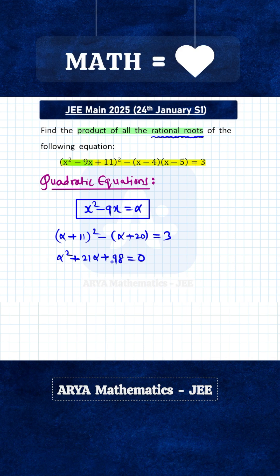By splitting the middle terms, you can easily get the factors. Here the factors will be alpha plus 7 and alpha plus 14. So therefore, the roots are minus 7 and minus 14. These are the two values of alpha that we are getting.